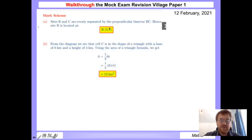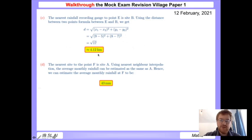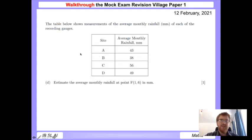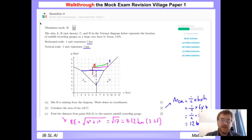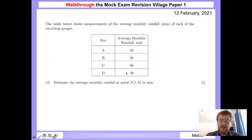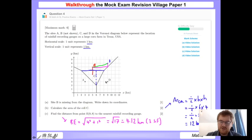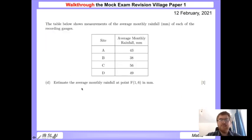So 4.12 kilometers. Always say what you're rounding to - generally the standard is three significant figures, but just make sure you say that to guarantee those marks. For this question, the table below shows measurements of the average monthly rainfall in millimeters at each of the recording gauges. A is 43 millimeters, B is 38, C is 56, and D is 49.